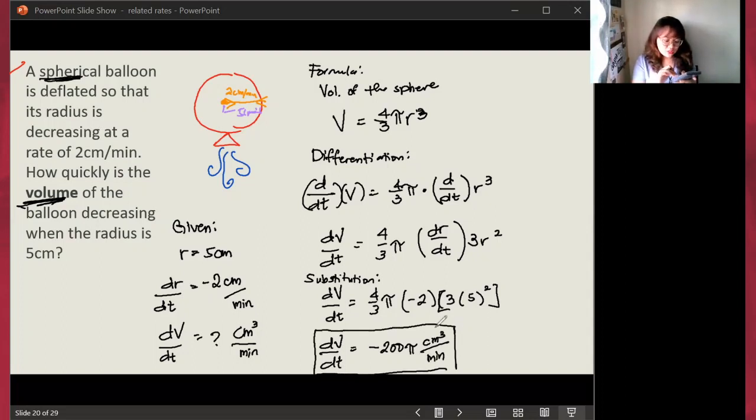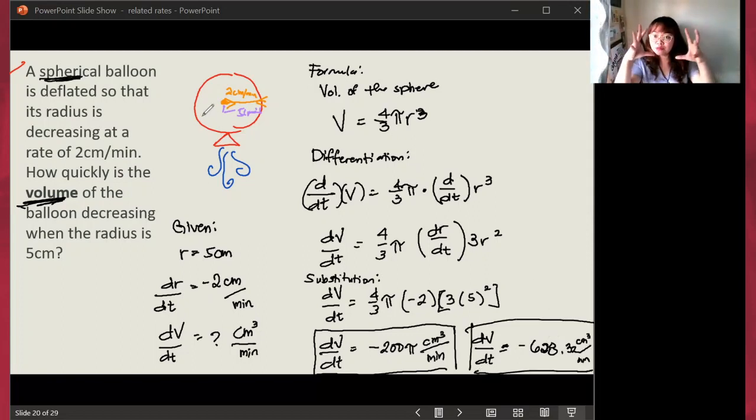So, this is one answer. Or, you could also change that into decimal places. And dV/dt, the change in your derivative is negative 628.32 cubic centimeters per minute. Why is it negative? Because it's being deflated. Therefore, the volume decreases because it's being deflated. This is now how we solve it. And we're done. Thank you so much for listening. I hope you learned something today.